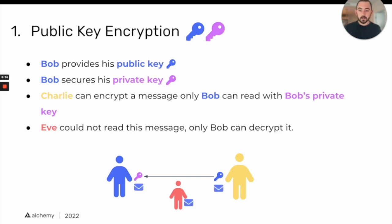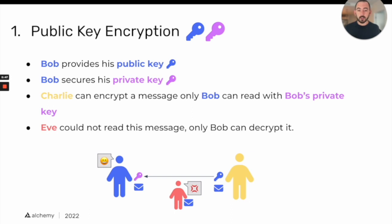Even if Eve intercepts the message in the middle, she cannot read it — because only Bob can decrypt it with his private key. So Bob is happy and Eve is frustrated, because only Bob can read what Charlie sent.